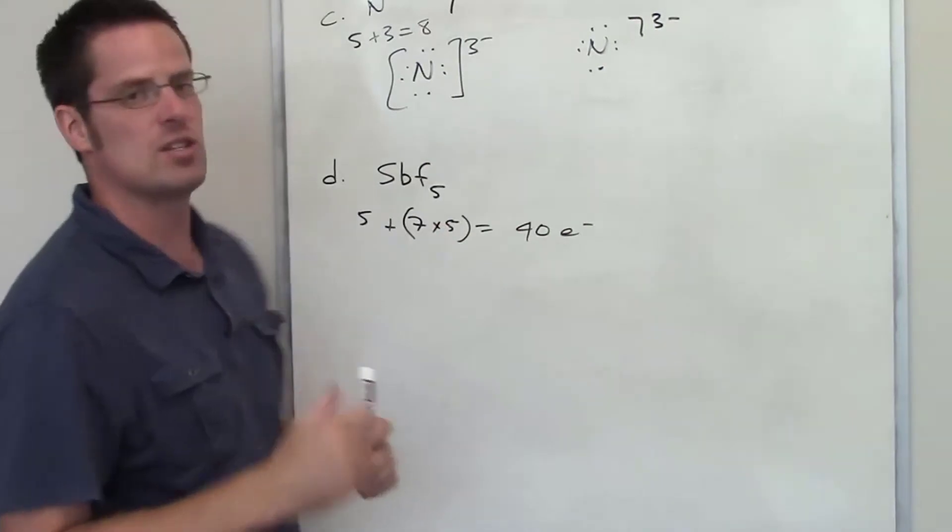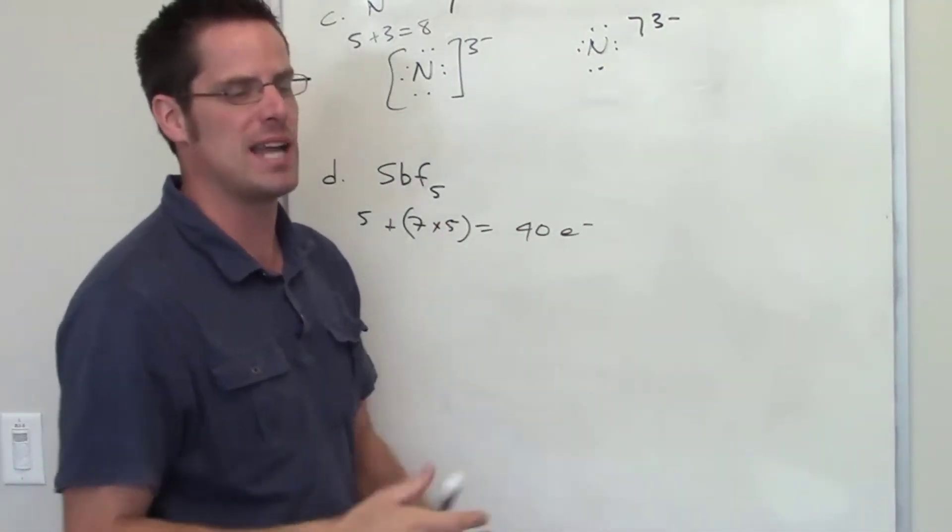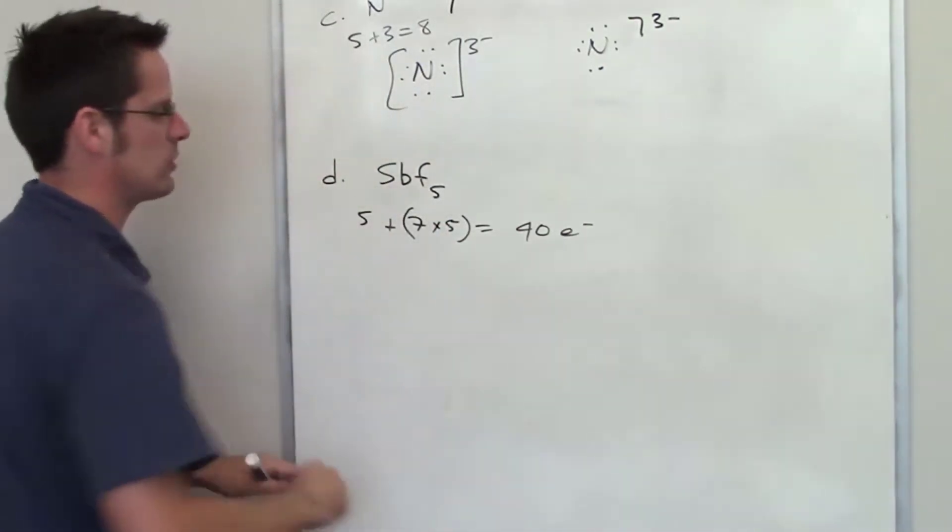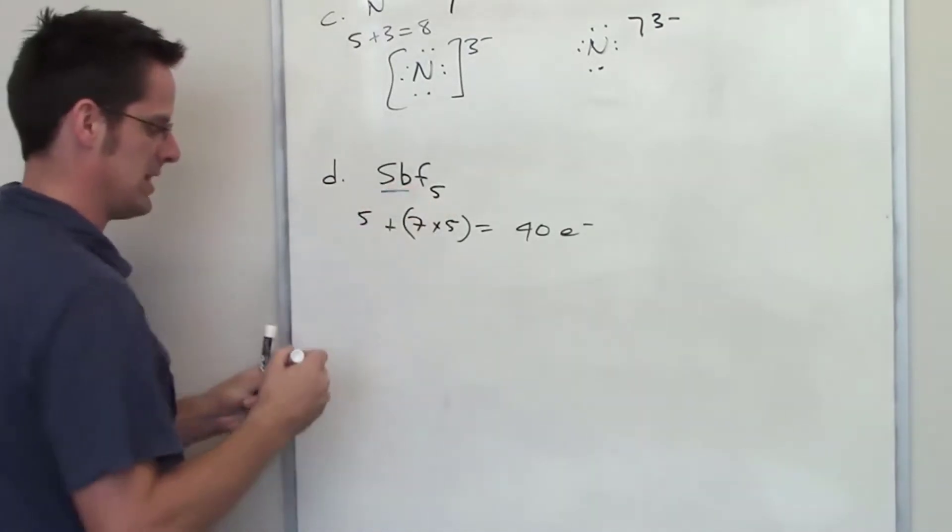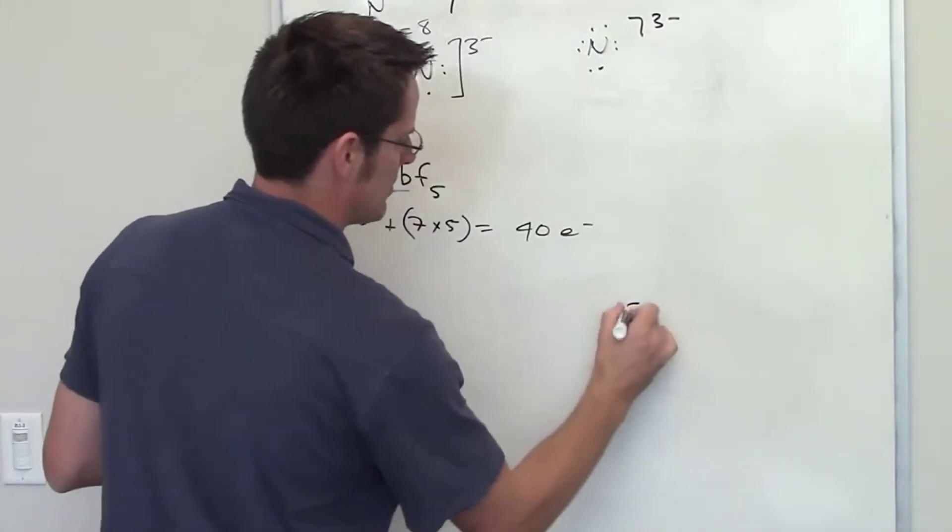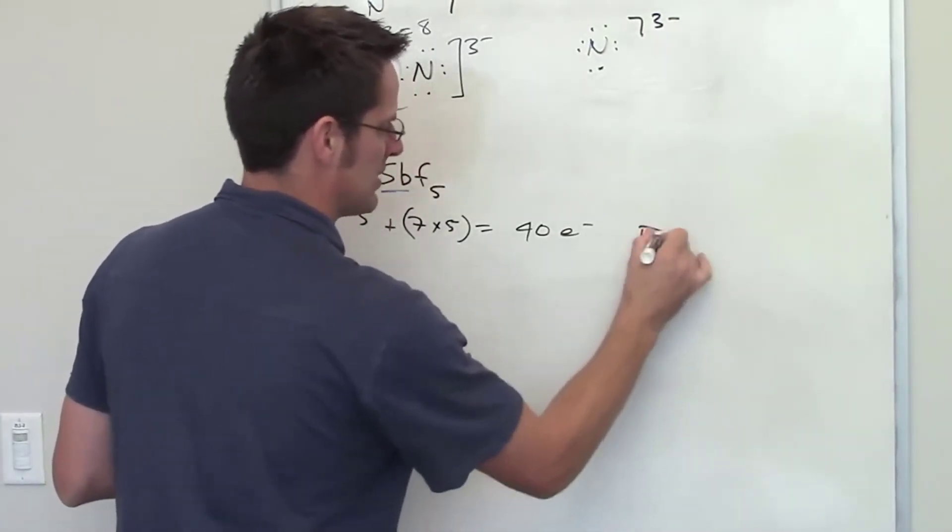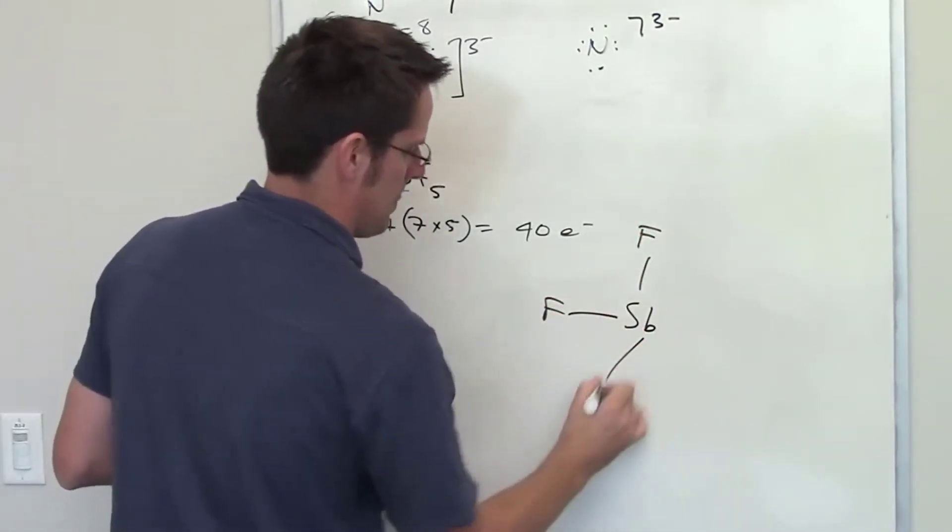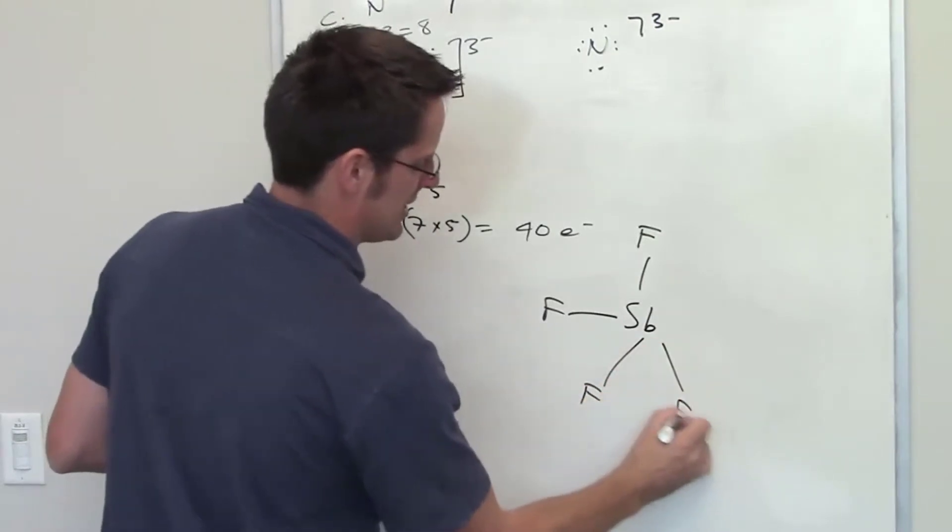So the next thing I need to do is figure out how they're going to be bonded together. Generally speaking, the least electronegative atom, in this case antimony, is the one in the center. The exception is, of course, hydrogen. I don't have any hydrogens to worry about here. So I'm going to put antimony in the center, and then I'm going to put bonds out to fluorines, or five fluorines in this case.